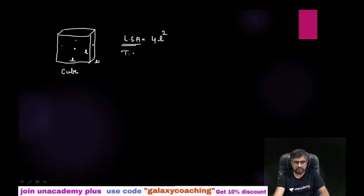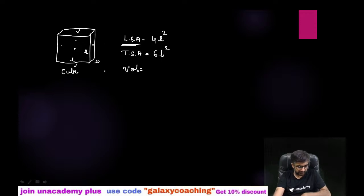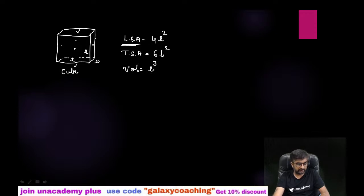For total surface area, we add the top and bottom to the four faces, so there are six faces total, giving us 6l squared. For finding the volume of any three-dimensional figure, you multiply the base area with height. Base area is l × l, and height is also l, so volume = l × l × l = l cubed.